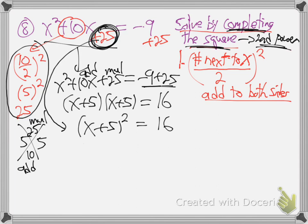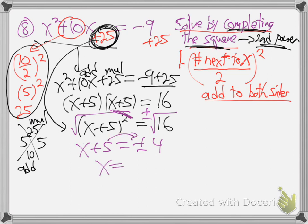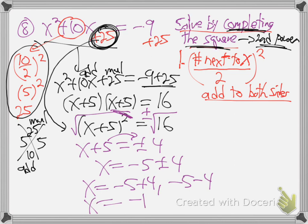Now we know how to solve from here: put a root on both sides to cancel the 2 power — up and down the ladder. So x plus 5 equals plus or minus root of 16, which is 4. Jump the 5 over: x equals negative 5 plus or minus 4. That gives us negative 5 plus 4 equals negative 1, and negative 5 minus 4 equals negative 9. Those are the two answers.